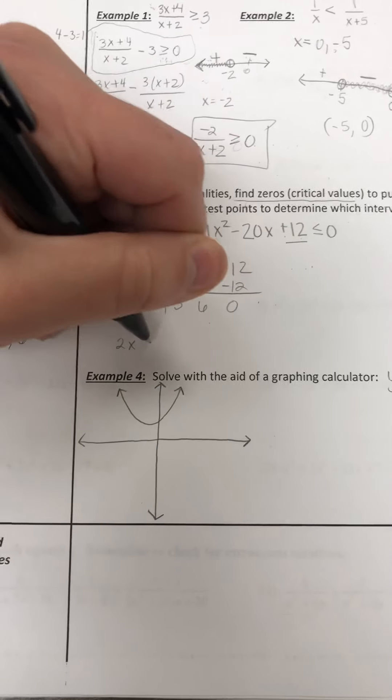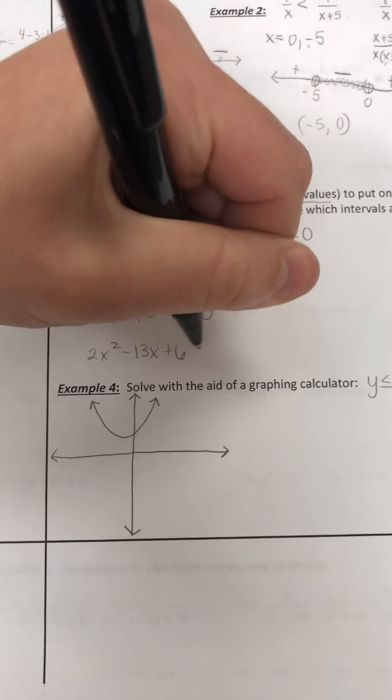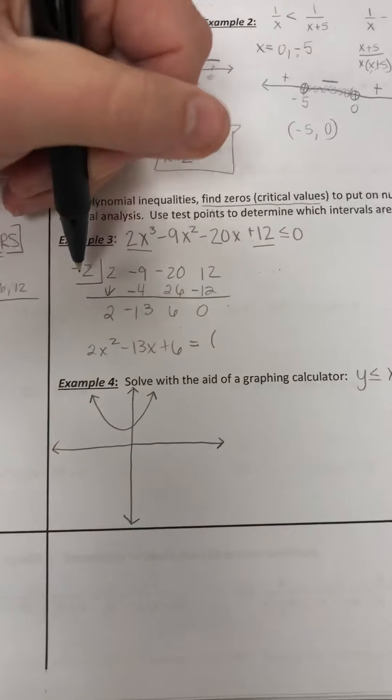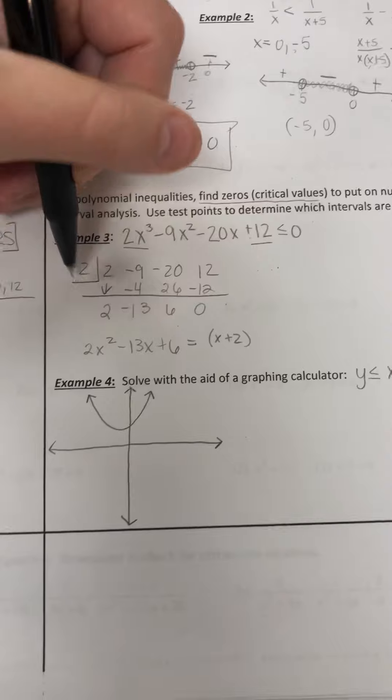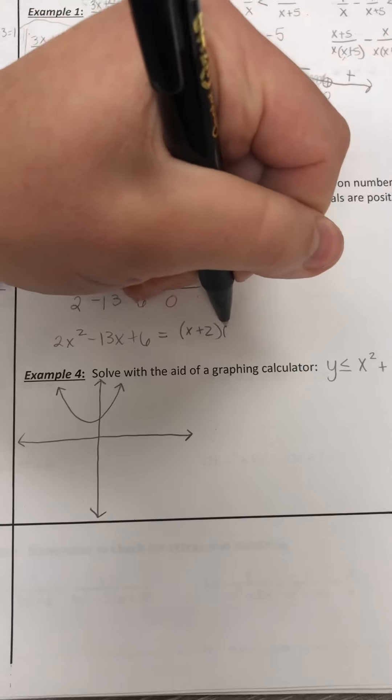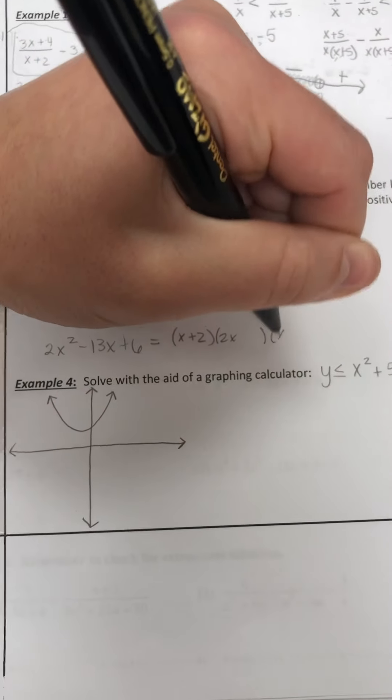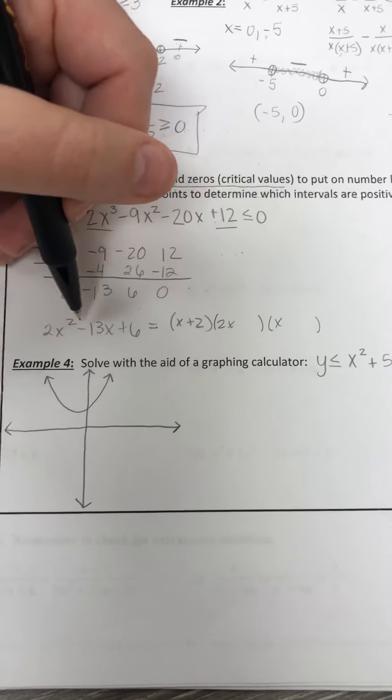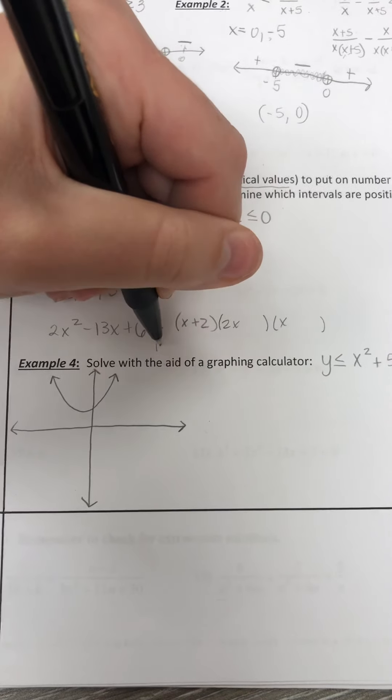So we have 2x squared minus 13x plus 6, which obviously becomes, let's see, we have x or negative 2, which is x plus 2. So we can't forget to include that one. And then when it comes to factoring this one here, we have 2x squared, so we're going to have a 2x, and we're just going to have an x here. If 6 times 2 would be 12, and then together they should equal 13, so obviously we would use 12 and 1.